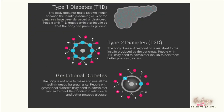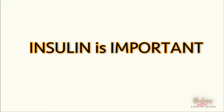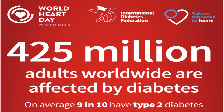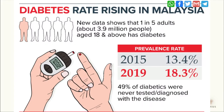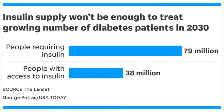There are three types of diabetes: Type 1, Type 2, and gestational diabetes during pregnancy. Based on statistics from 2017, more than 425 million adults worldwide are affected by diabetes. In Malaysia in 2019, 3.9 million people had diabetes. Most diabetic persons need to depend on insulin; however, only about half of the population has access to insulin.